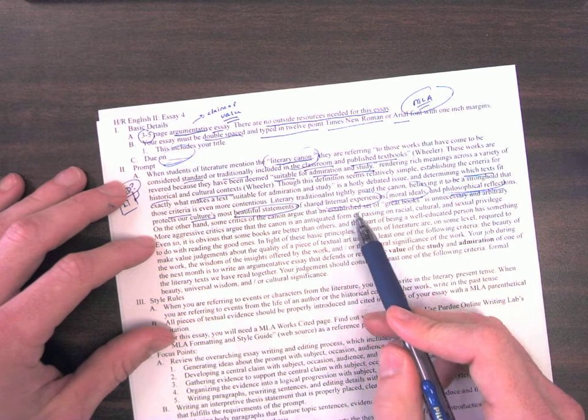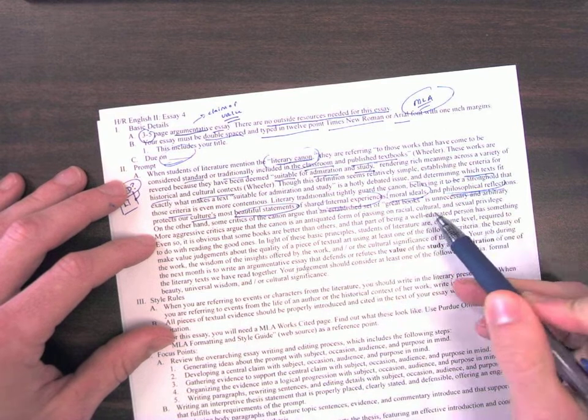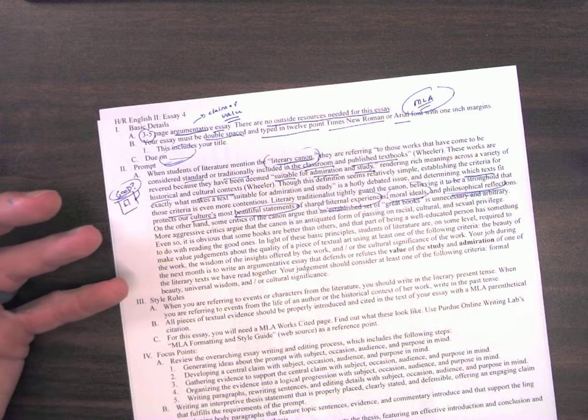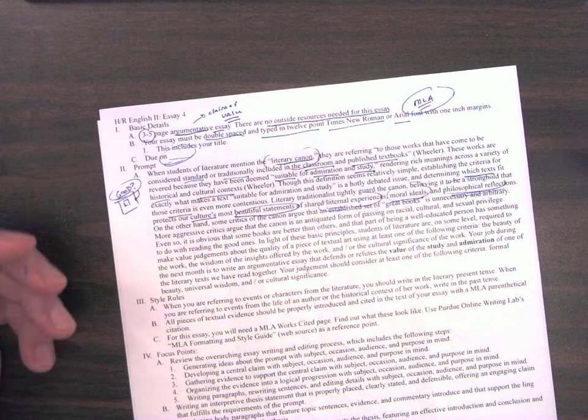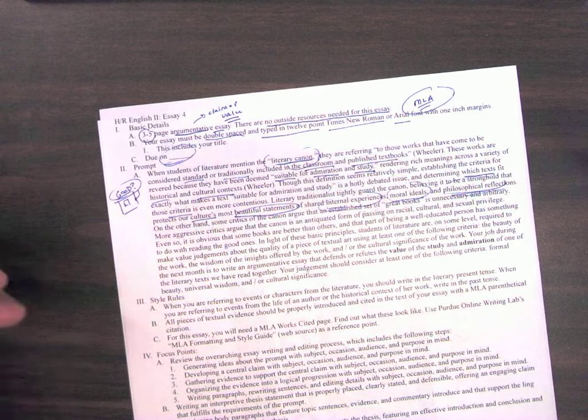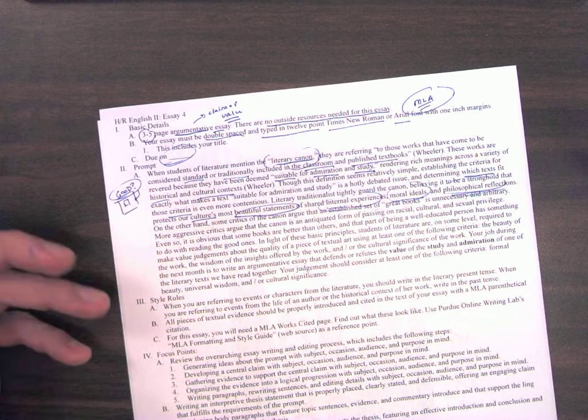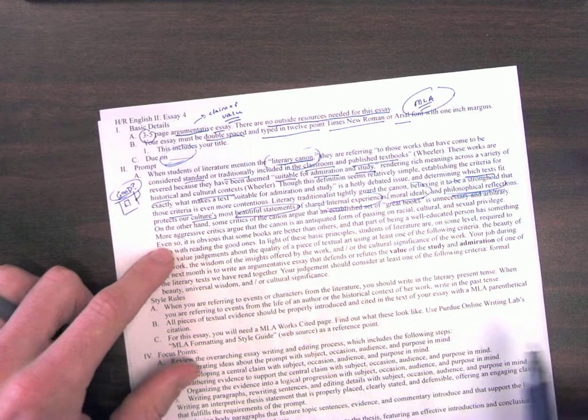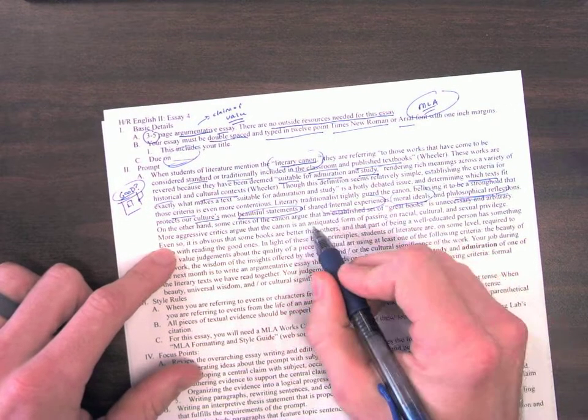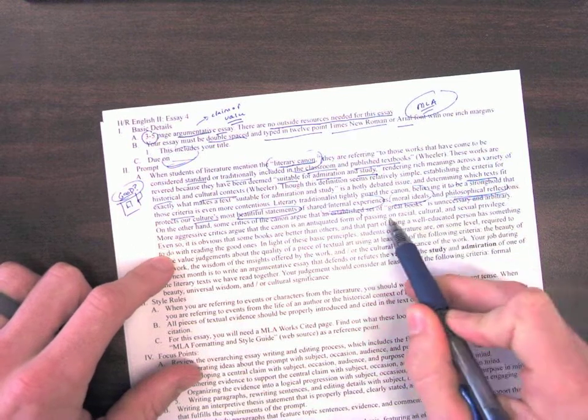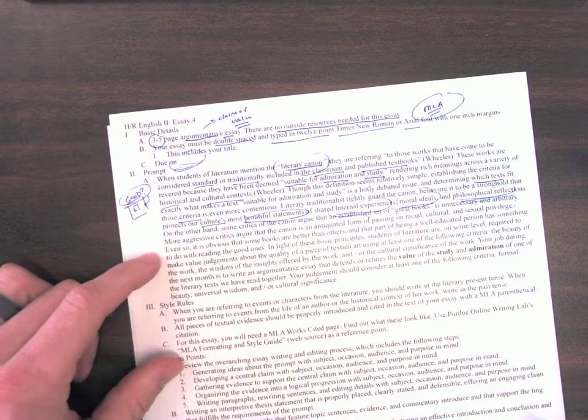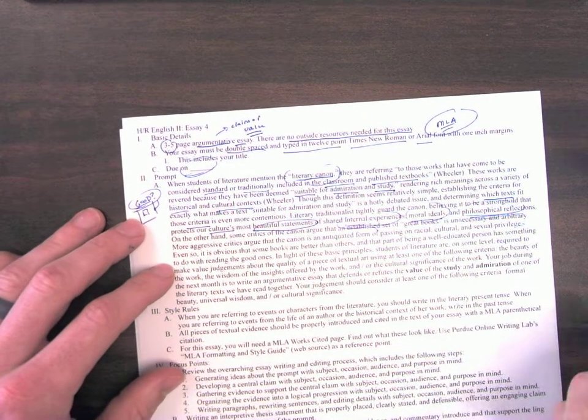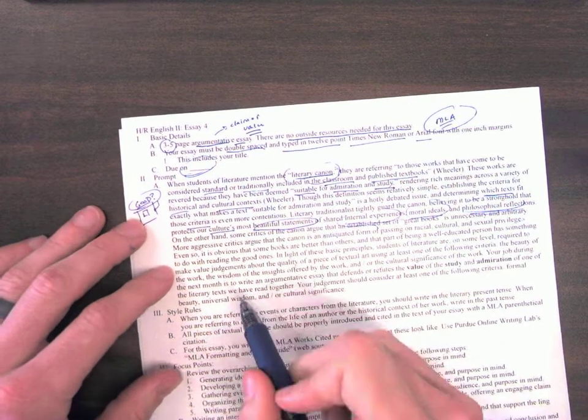On the other hand, some critics of the canon argue that an established set of great books is unnecessary and arbitrary. In other words, who gets really to define what a great book is? What's the difference between Diary of a Wimpy Kid and Virgil's Aeneid? In the end, one's old, one's new. Aside from that, calling it good is just your personal opinion. Even more aggressive critics argue that the canon is an antiquated form of passing on certain kinds of privilege. So the books themselves help safeguard the power of elites at the expense of those who do not have it. So I wouldn't worry too much about that criticism.